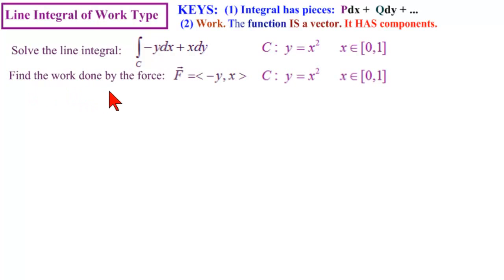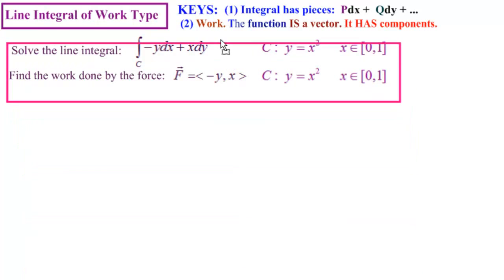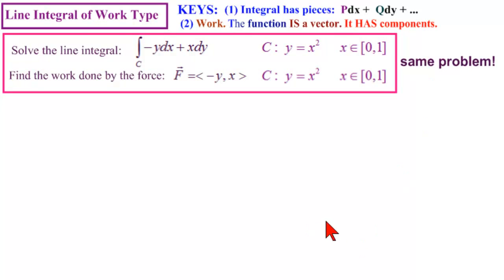Now this is the exact same problem: find the work done by the force, and this is a vector field with two components because it's in 2d, minus y (see the minus y), x, over the same curve. This is exactly the same problem. They are solved in the same way. You just have to match up the pieces. Notice the curve is the same, and notice the component on x is minus y, the component on y is x.